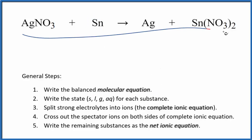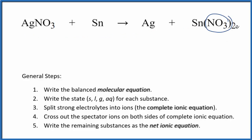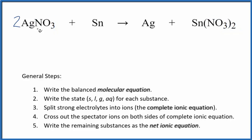This is our molecular equation, and I can see I have this nitrate here — I have two of them and only one here. So I'm going to put a 2 in front of the silver nitrate. Now I have two nitrates, but I have two silver atoms. That's easy enough to fix — I'll put a 2 here, and then I have one tin and one tin. So those are balanced. This is the balanced molecular equation.